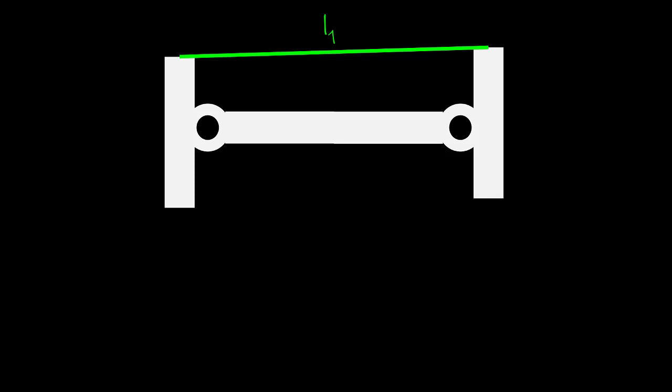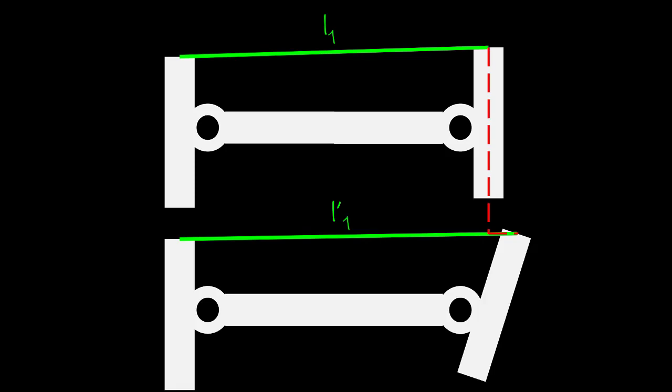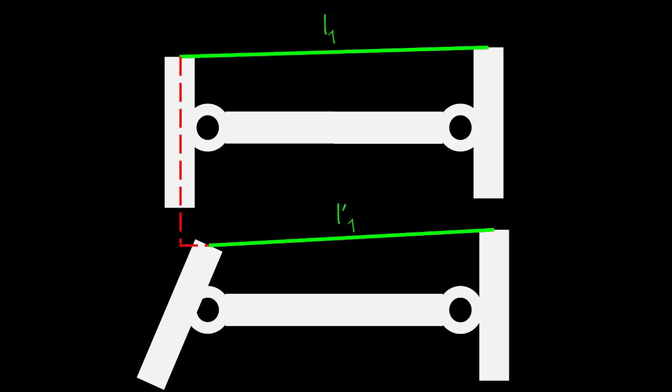We have an example of a generic system with two joints and one MTC crossing both joints. After a rotation of the right joint in the clockwise direction, note that we have an increase in MTC length, denoted by the prime symbol. After a rotation of the left joint in the clockwise direction, note that we have a decrease in MTC length, again denoted by the prime symbol.